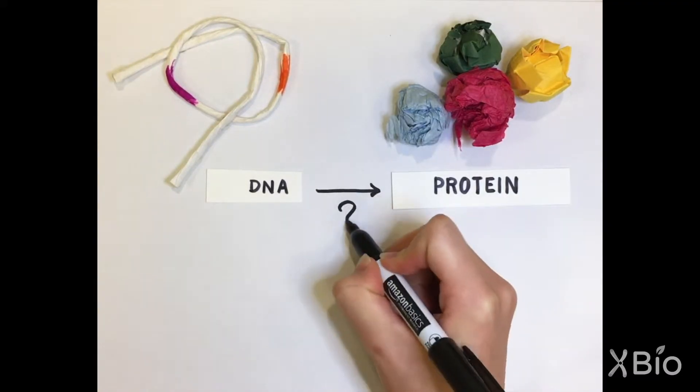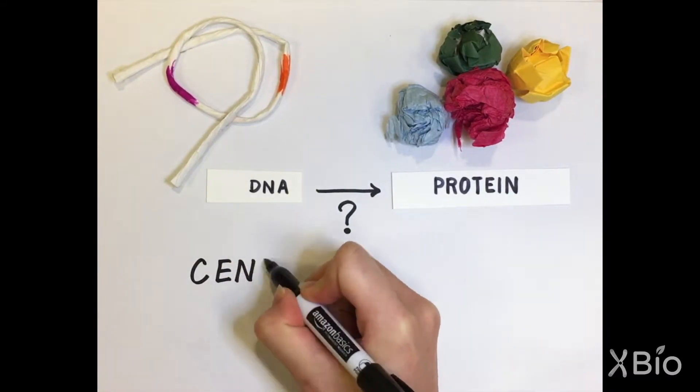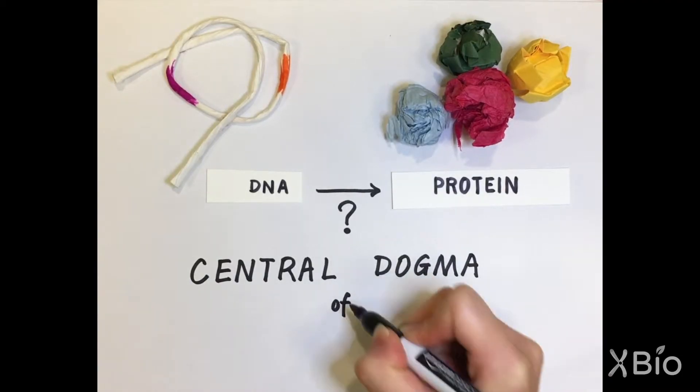So, how do we get from DNA to proteins? This flow of information is known as the central dogma of biology.